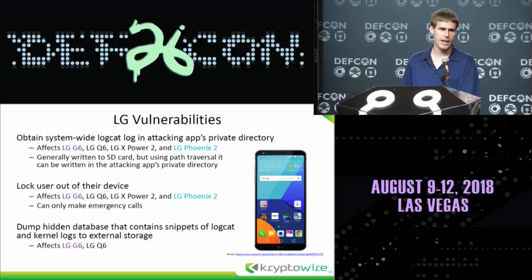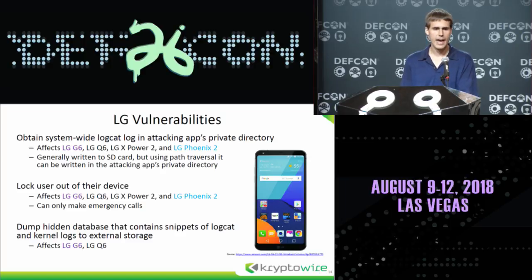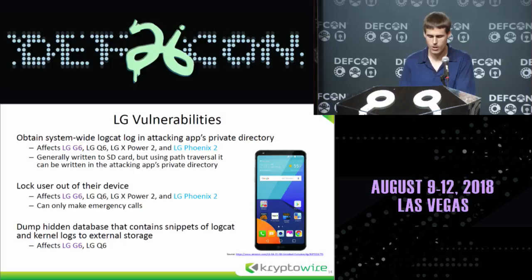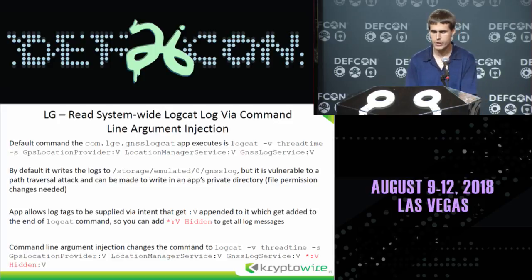A zero-permission app can just send a single broadcast intent and the screen lock will not let the user in. There's another pre-installed app where you send it a broadcast intent and it's going to write a database that contains snippets of the logcat log and the kernel log to external storage. To get the system-wide logcat log, there's a pre-installed app that will execute a command when you activate it by sending an intent — you can actually provide the path.